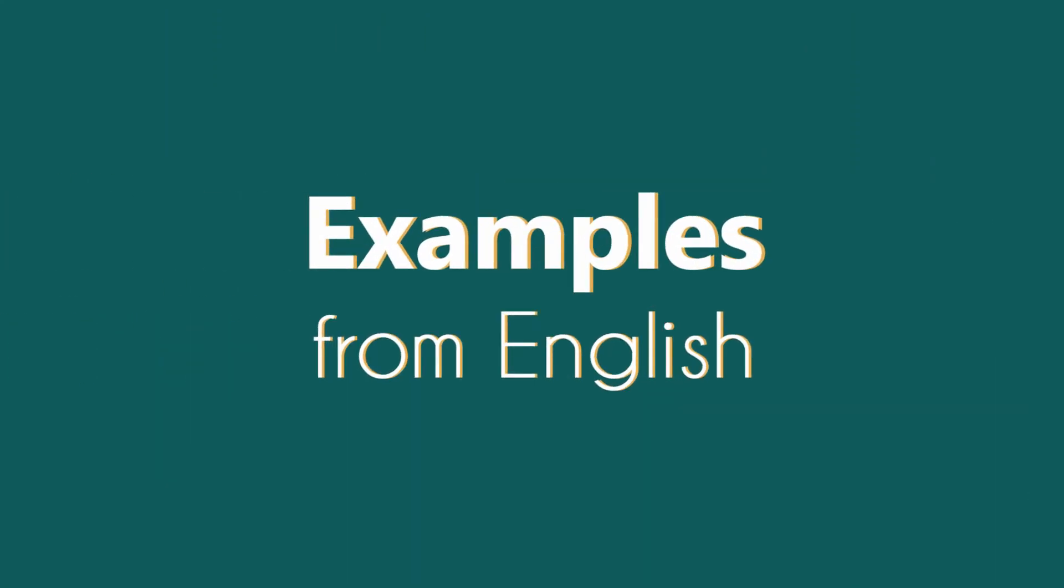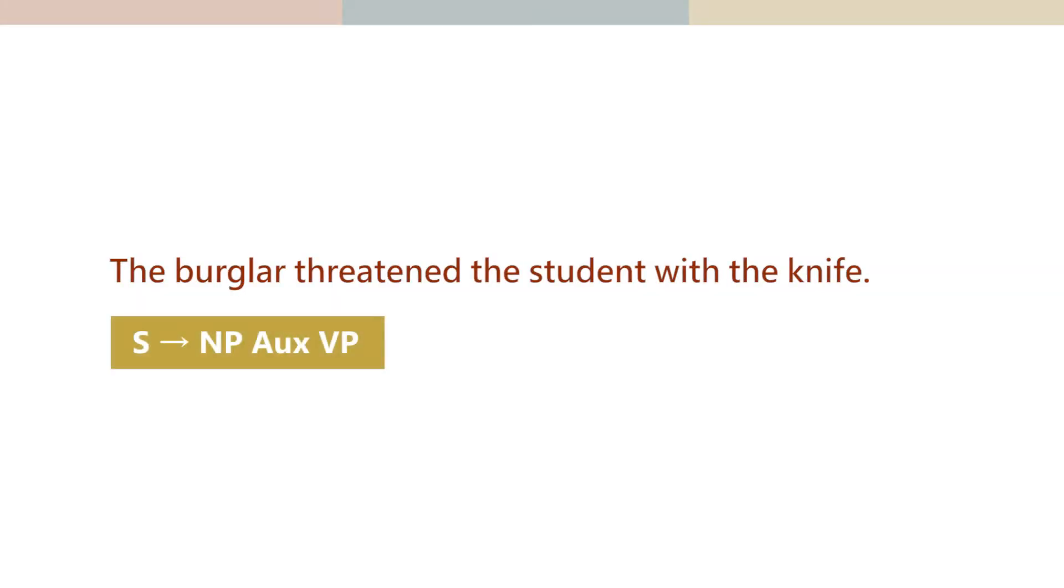I can give you an example that has a sentence that has at least two meanings: 'The burglar threatened the student with the knife.' So, can you see the ambiguity here? What are the two possible meanings?